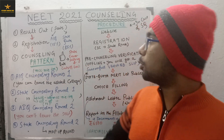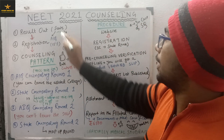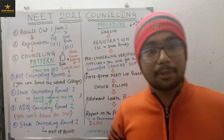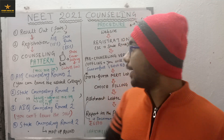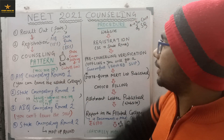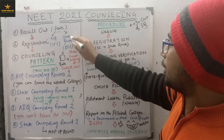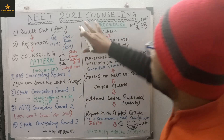First, your result comes out and seats are declared. Now seats are of two types: All India Quota (AIQ) seats and State Quota seats.